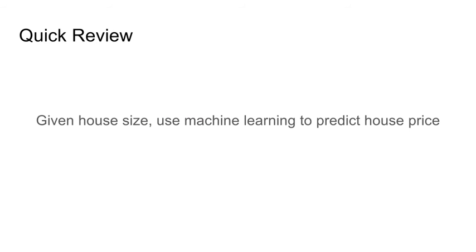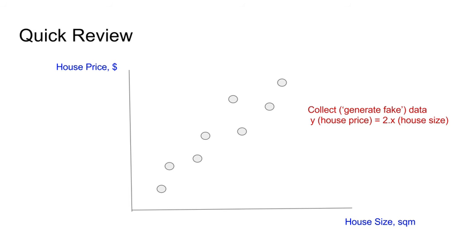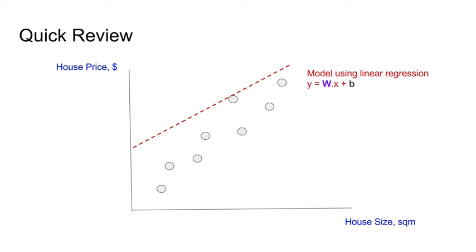A quick review: our goal is, given house size, to use machine learning to predict the house price. Without data we cannot predict anything. So we collected, or rather generated, some fake data where y, the house price, is always equal to 2 times the house size x. We model our data using linear regression because it is simple and demonstrates TensorFlow usage.